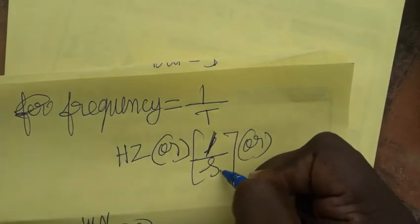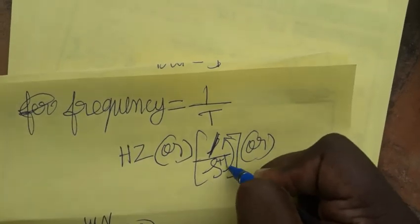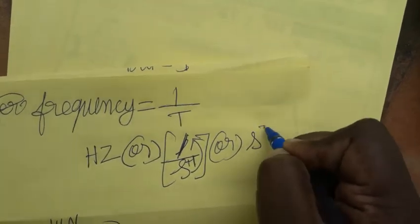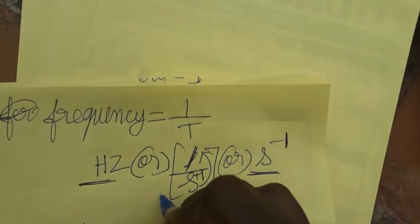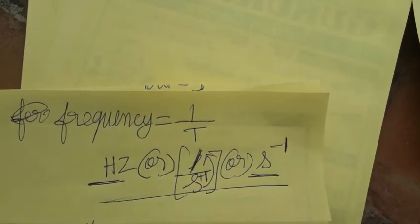The other unit notation: when moving seconds from denominator to numerator, the exponent changes from plus 1 to minus 1. So it's second to the minus 1, or s^-1. Hertz is 1 per second or second inverse. All of these can be called frequency units. Thank you.